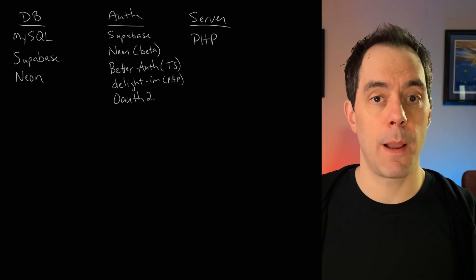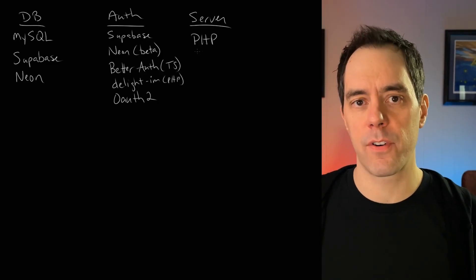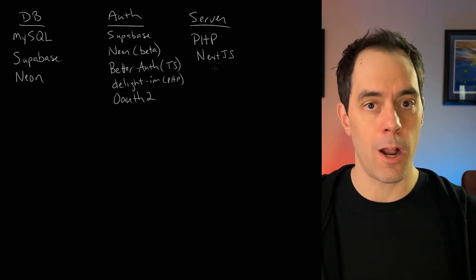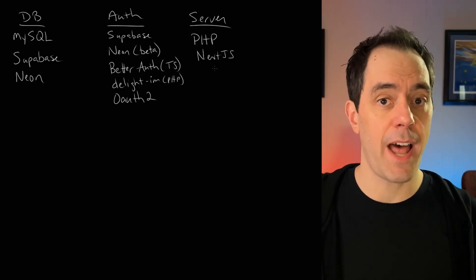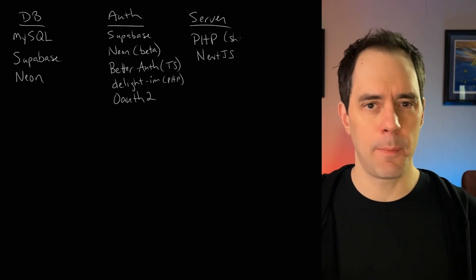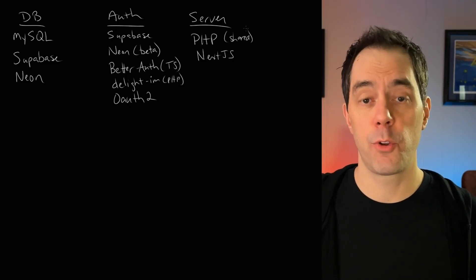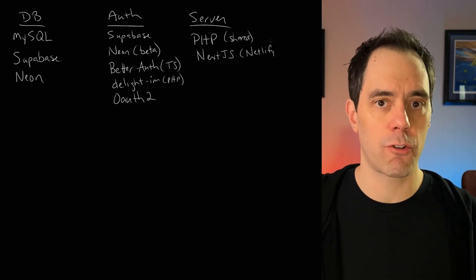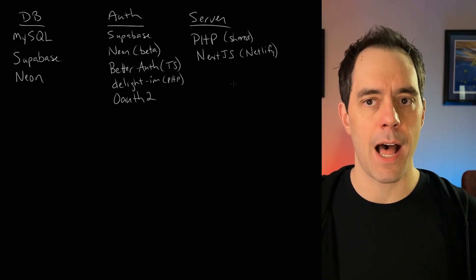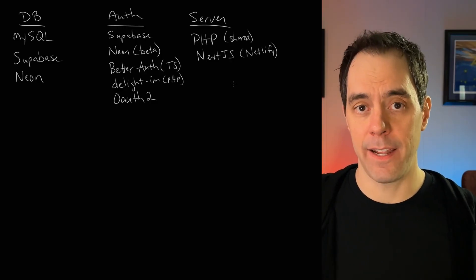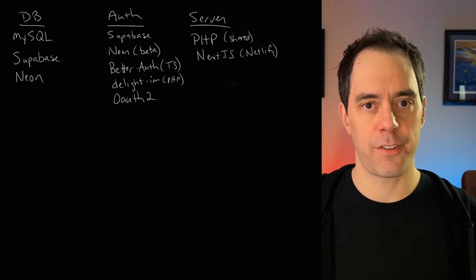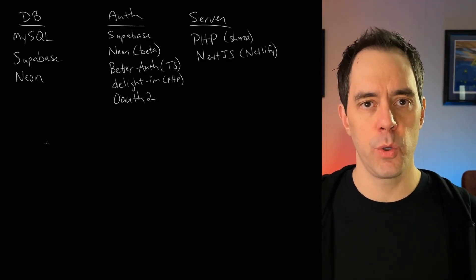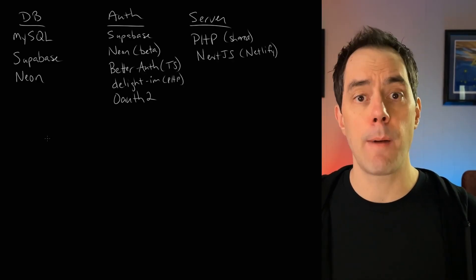For the server, I could go full JavaScript with Next.js, and that would cover both the server side and any browser-side code I need since that's React. If I go that route, I can deploy to Vercel, Netlify, Hostinger, or any similar platform. Another option is to use PHP as the server on the shared hosting site, and in that case I'll have to write either vanilla JavaScript or React for any browser-side interactions. Now that I have all my candidates, I see these as puzzle pieces I want to group into possible tech stacks.